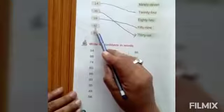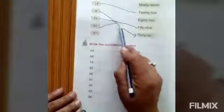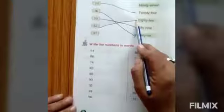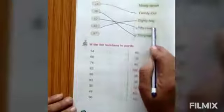82. It is written over here, E-I-G-H-T-Y eighty T-W-O 2.